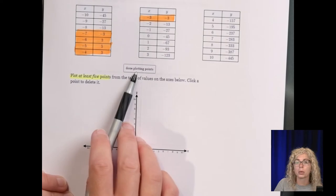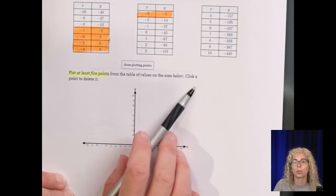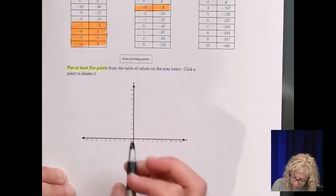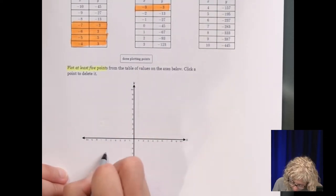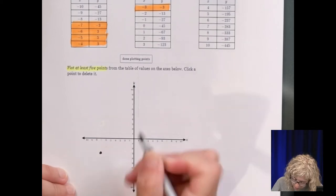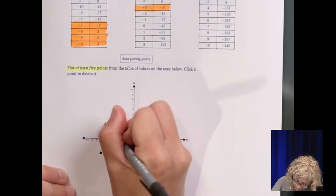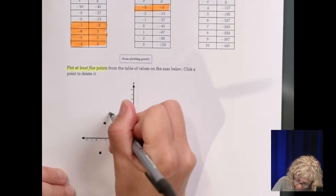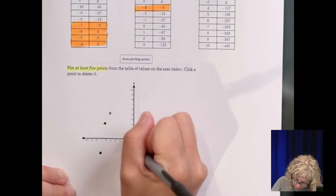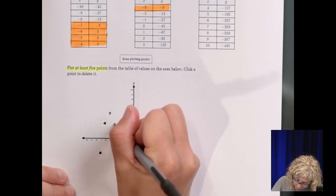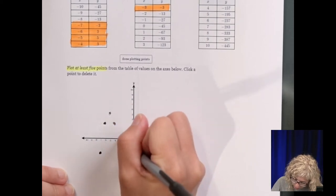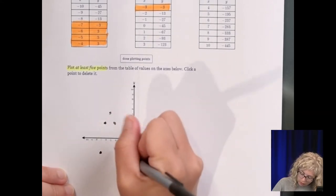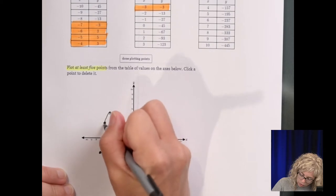If you're done plotting points, you click that button. If you want to delete a point, click a point to delete it. So: negative 7, down 3; negative 6, up 3; negative 5, 5; negative 4, 3; and negative 3, negative 3. And there's our U-shaped curve.